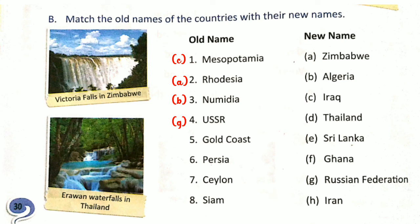Write in your notebook with me. Number 5, Gold Coast. Gold Coast is the old name of Ghana. Ghana is the new name of Gold Coast. Number 6, Persia. Persia is the old name and the new name is Iran. Iran is the new name of Persia.